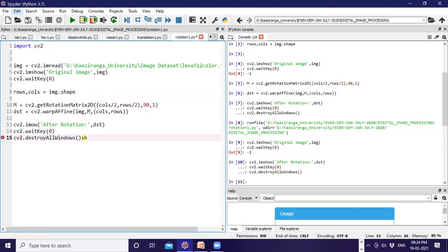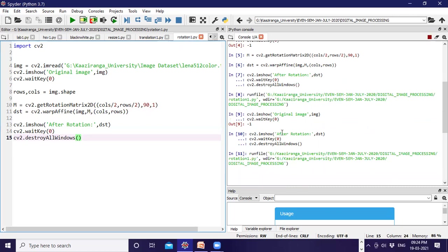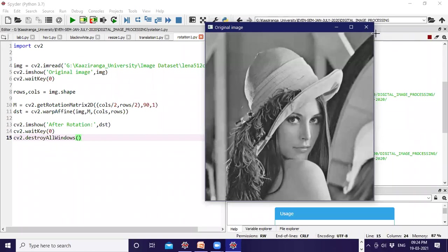Let me display the output. Let me execute the file - I've given the name rotation1 for this file. It's running. See, this is the original image - you can clearly see this from this portion of code.